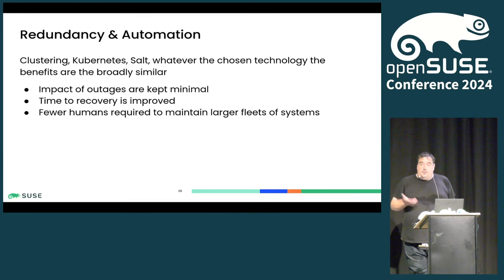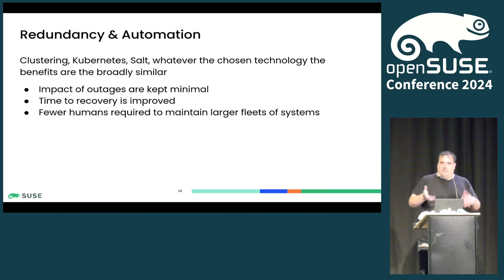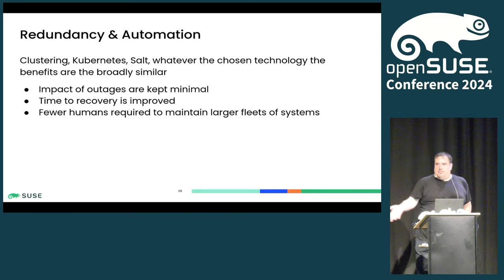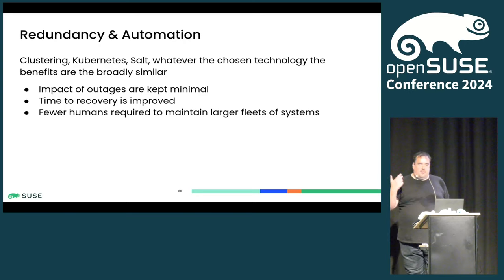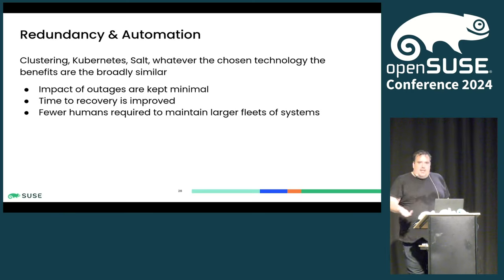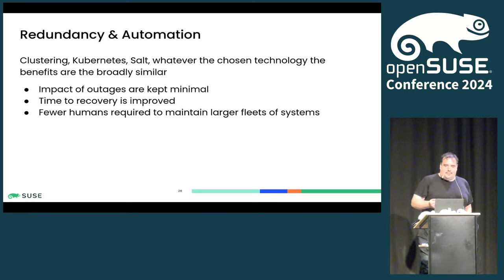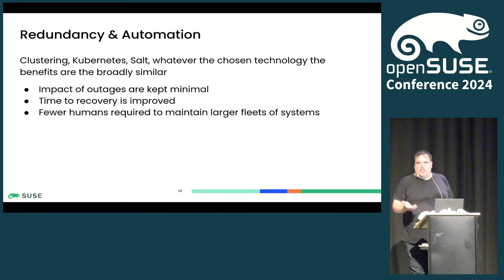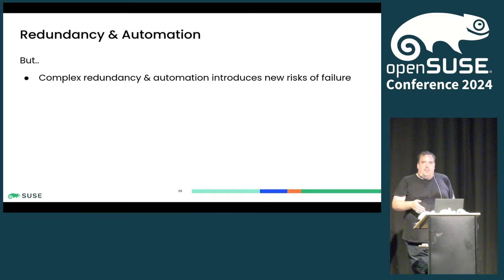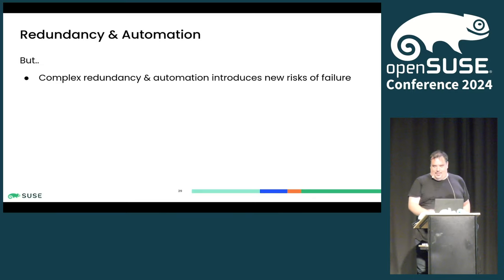Lots of people just throw more and more servers at the problem — clustering, Kubernetes, Salt, whatever. Have automation, have more machines, orchestrate everything. Have duplication so you can take one node down while working on another. It does keep the impact of outages and maintenance minimal — you can quite often do half of the maintenance without any of the impact. When it does go wrong, your time to recover is improved. You need fewer humans to look after more and more machines, which is good because they're making more and more machines. Using automation is just basic common sense as things grow. But if the automation is itself nice and complex, congratulations — you've just introduced a whole new way for everything to break all in one go. So it's not perfect.